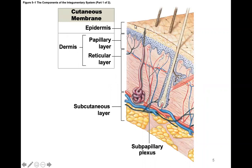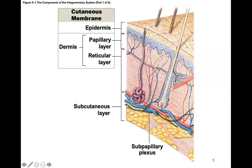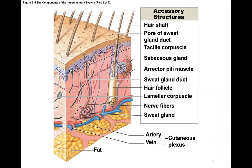Looking at the cutaneous membrane, we have the epidermis as a very thin layer of multiple layers of epithelial tissue. Then we have the dermis, consisting of a lot of connective tissue and various other tissue types. And then we have the hypodermis — the subcutaneous layer — which is not technically part of the skin. It is just the connective tissue underlying, mostly fat.